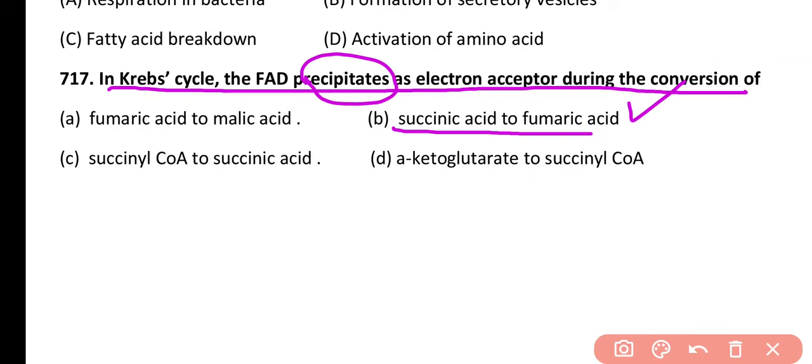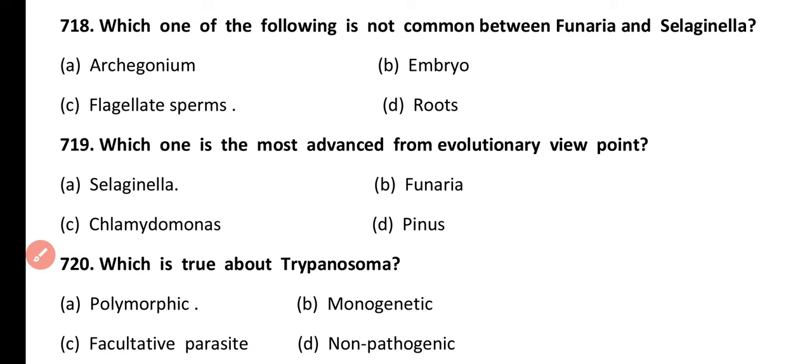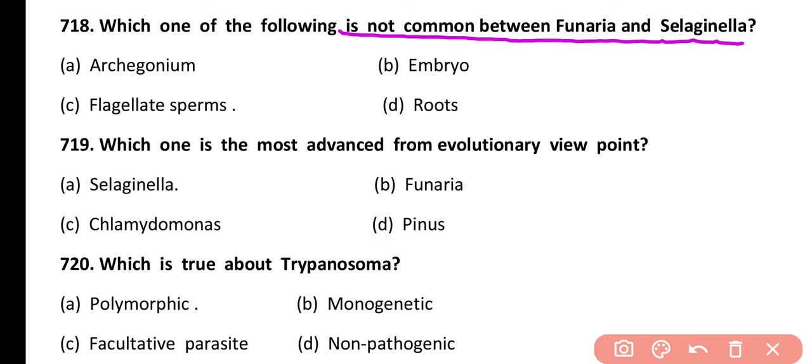Question 718. Which one of the following is not common between Funaria and Selaginella? Archegonium, embryo, flagellate sperms, or roots. Correct answer is option D. Roots are present in Selaginella, while rhizoids — which are root-like multicellular structures — are present in Funaria. So roots are not common between them.